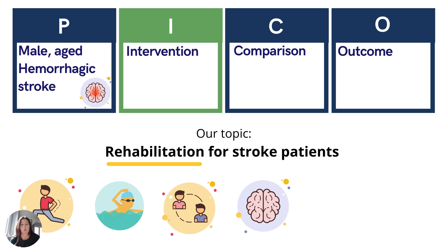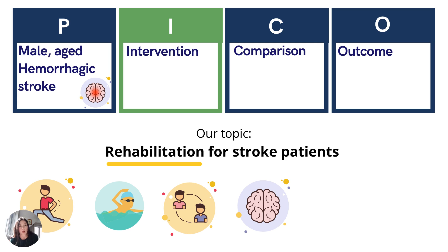For Intervention, we're asking ourselves what are the main interventions, prognostic factors, or exposures we're considering. In this case, we have a really broad term — rehabilitation — and we need to narrow that down further. We can either focus on a specific intervention or connect that intervention to the outcome. So by that, I mean what we're going for and how we can get there. If we're looking for functional mobility, our best bet would be physical therapy. If we were looking for speech fluency, we might look at speech-language pathology. If we were looking at improved memory, we might look at neurology. If we were looking for independent living as an outcome, we might look at occupational therapy or a blend of other therapies.